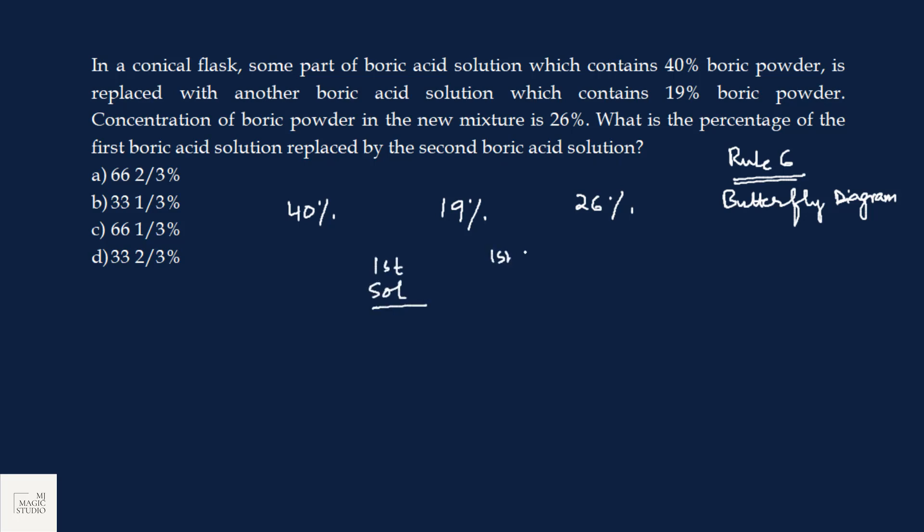First solution, this is first solution taken out and replaced by second solution. 40% strength, 19% strength and in the middle we will write the overall strength left. Now, we will use our butterfly cross diagram. 40 minus 26 is 14. 26 minus 19 is 7. So, this ratio is 1 is to 2. That means, if in the entire part there were 3 parts, this is 1 is to 2.